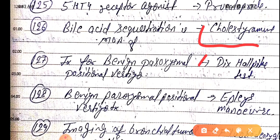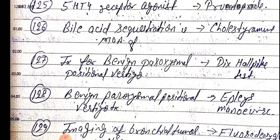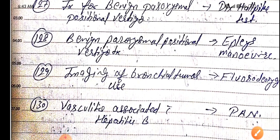Investigation for benign paroxysmal positional vertigo is by the Dix-Hallpike test. Treatment of benign paroxysmal positional vertigo is with the Epley manoeuvre.